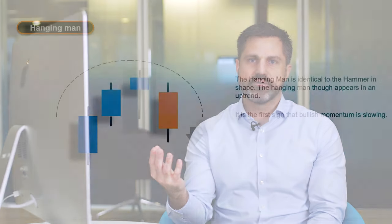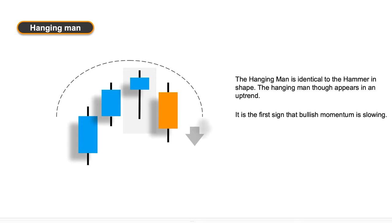The next candle formation is the hanging man. The hanging man is exactly the same as a hammer, except instead of being at the bottom of a trend it's at the top of a trend. The sellers have been trying to battle it out but in the end the buyers still dominated and the price has finished close to the top of the candle. If you've got preceding candles that are blue and trending upward, potentially the next day if those sellers come back into the market we could see a reversal. You can see the confirmation on this screen where the next candle — an orange or downward candle — confirms that we've got that reversal, and the hanging man formation gave you that signal.